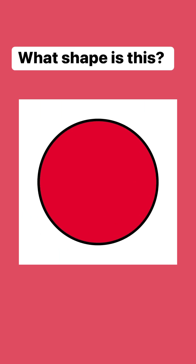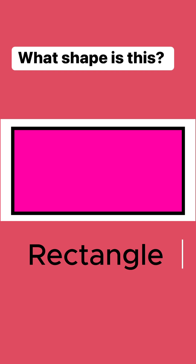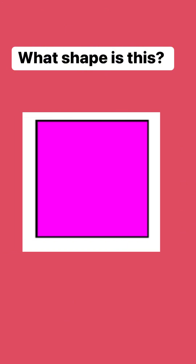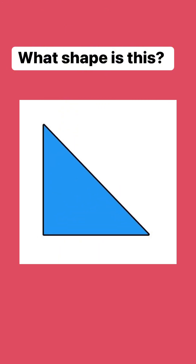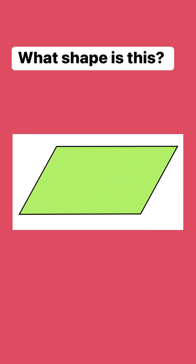What shape is this? Circle. What shape is this? Triangle. What shape is this? Rectangle. What shape is this? Ellipse. What shape is this? Square. What shape is this? Right triangle.